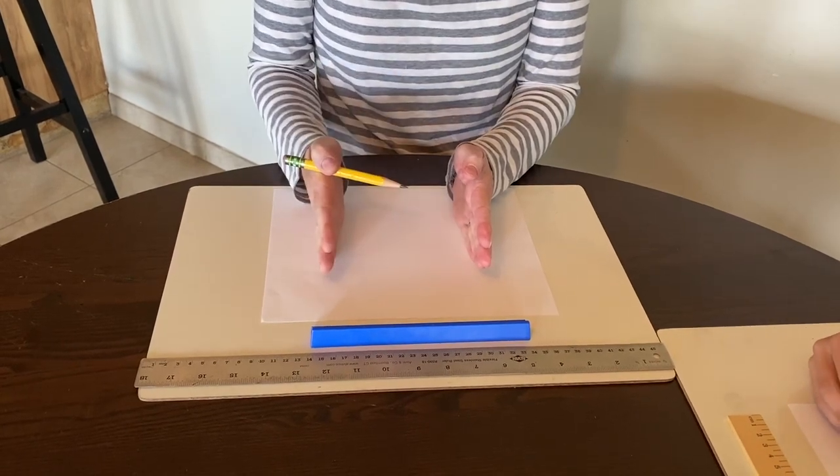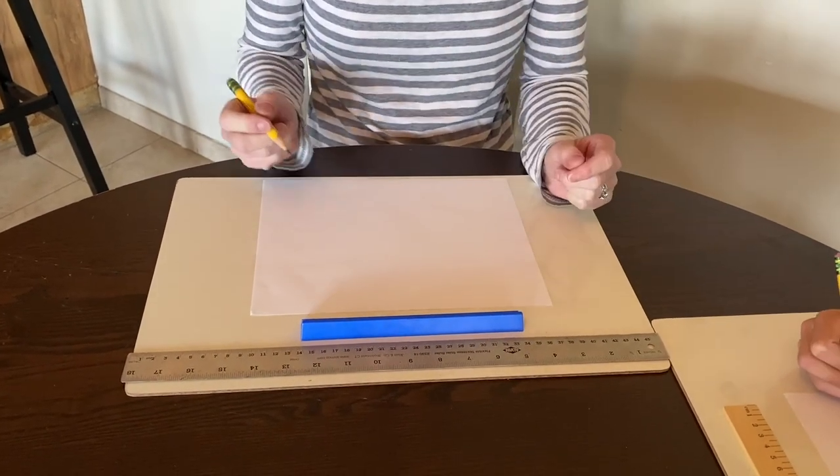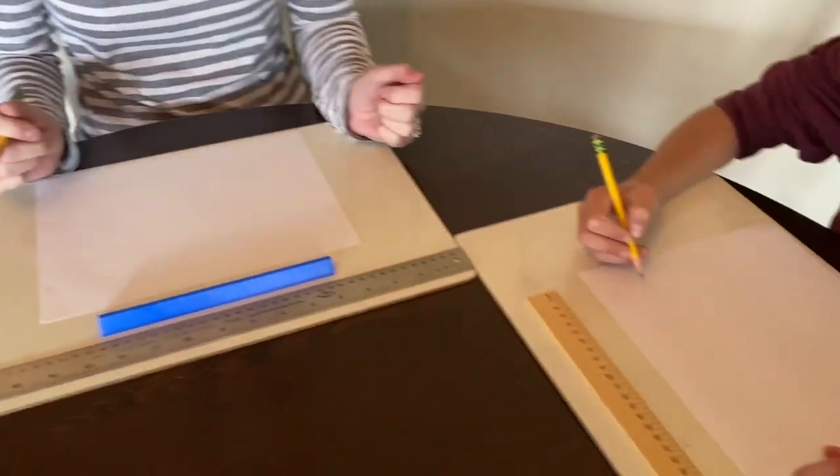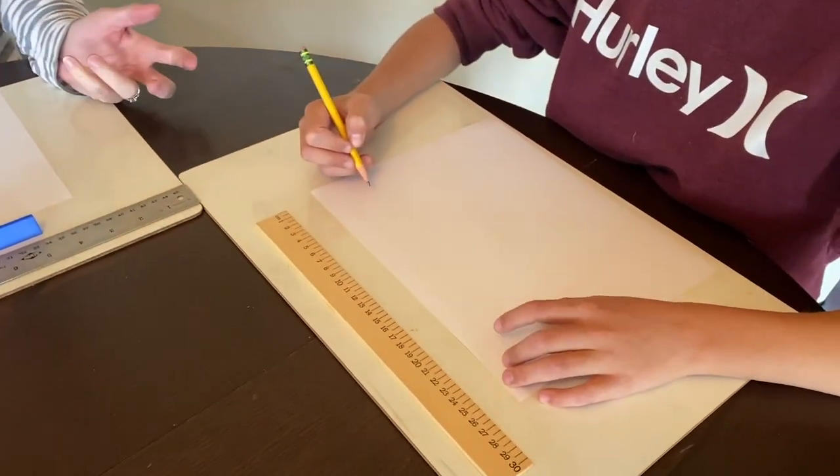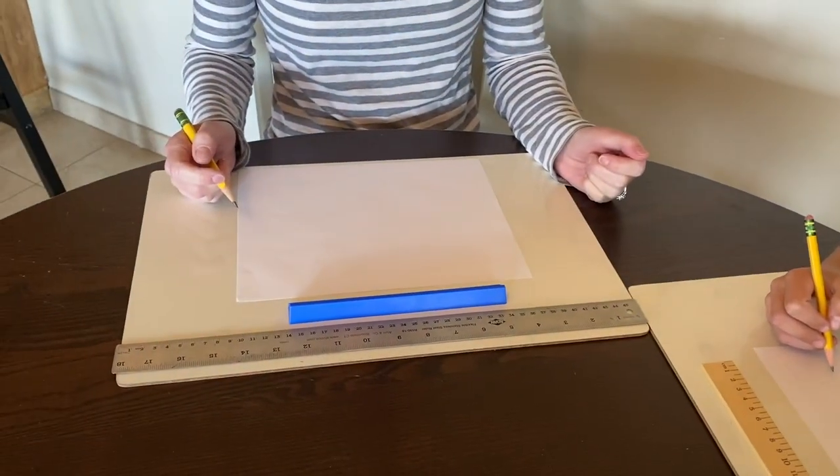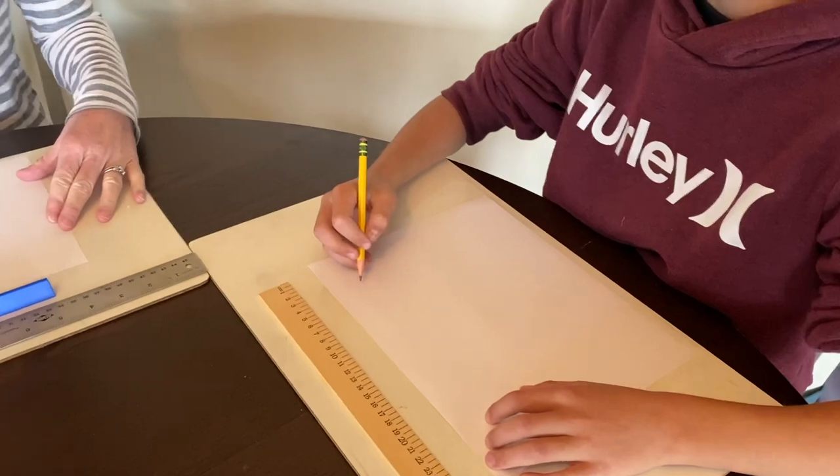So this is kind of a little bit of a review, but the best part about one-point perspective is there's an endless amount of awesome things that you can draw once you learn how to do it. So I've employed my son Eden to be my helper today, so welcome Eden.